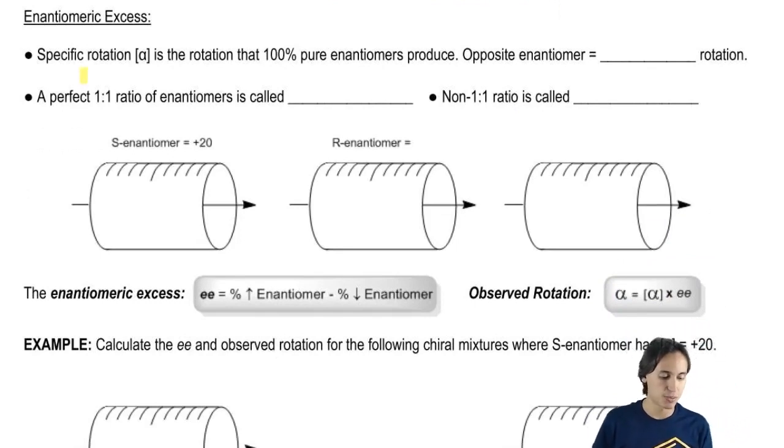Remember that the specific rotation is the rotation that 100% enantiomers would produce. So if I had a 100% enantiomer, let's say my specific rotation is 10 degrees, then I would get 10 degrees.